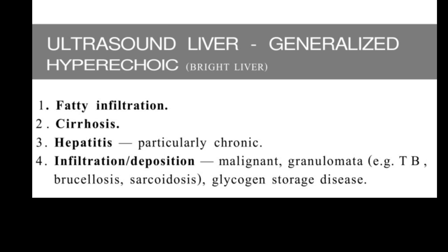The third differential is hepatitis — if chronic in nature, it will produce a generalized hyperechoic liver. In infiltrative or deposition conditions such as malignant granuloma, tuberculosis, sarcoidosis, and especially glycogen storage diseases, the liver will also appear hyperechoic. When giving your differential, you should have other investigations and the patient's medical record available. In summary, generalized hyperechoic liver is caused by fatty infiltration, cirrhosis, hepatitis, and certain infiltrative and deposition processes.